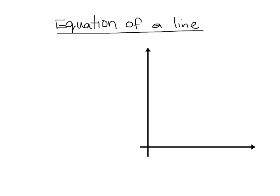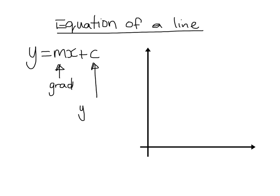Let's have a quick talk about the equation of a line. We all know by now that the equation of a line comes in the form y = mx + c, where m is the gradient of the line and c is your y-intercept, or where the line cuts the y-axis. I've got some axes here — that's my x, and this is my y.